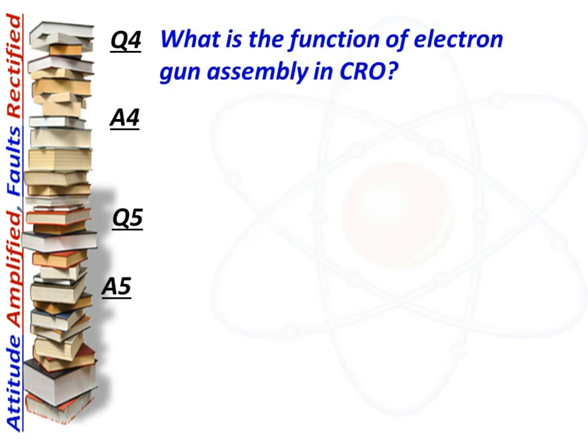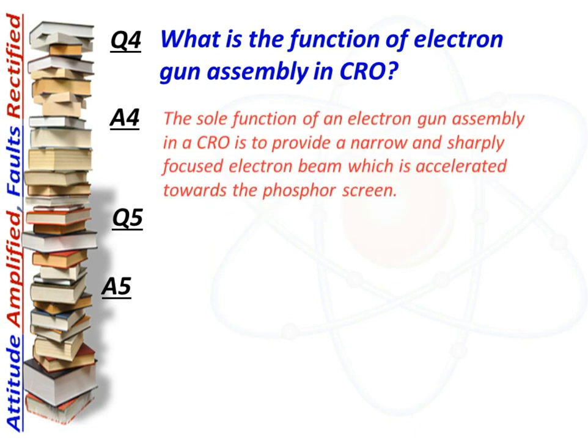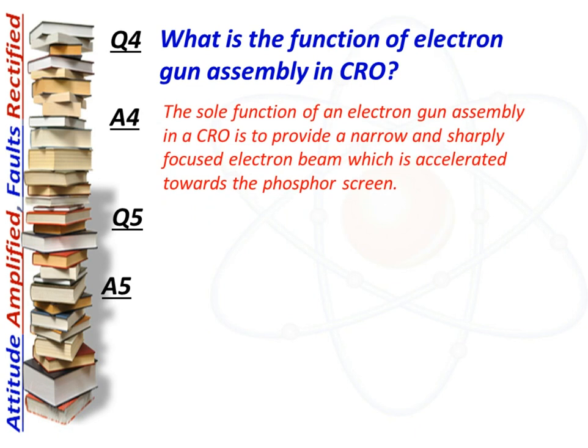Next question: what is the function of the electron gun assembly in a CRO? Answer: The sole function of an electron gun assembly in a CRO is to provide a narrow and sharply focused electron beam which is accelerated towards the phosphor screen.